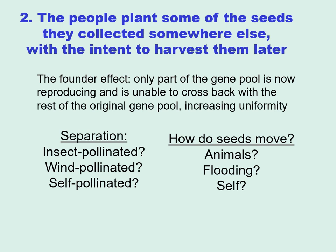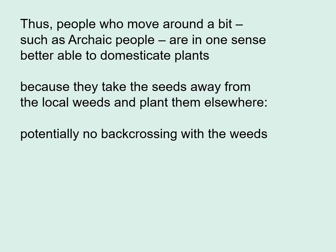Remember, weeds have greater genetic variability, and eventually domesticates have less genetic variability and more uniformity. What plays a role in this is how plants are normally pollinated — whether self-pollinated, wind-pollinated, or insect-pollinated — which affects whether what you've taken away could cross back with the weedy population. Thus, people who move around, such as archaic people, are in one sense better able to domesticate plants, because they take seeds away from the local weeds and plant them elsewhere, allowing potentially no back-crossing with the weeds.